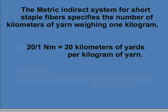There is an indirect numbering system that uses the metric system, referred to as the metric count of a spun yarn. In this system, the size refers to the number of kilometers per one kilogram of yarn. Therefore, a 20s metric count would have 20 kilometers of yarn per kilogram of weight. Metric count is abbreviated as NM.